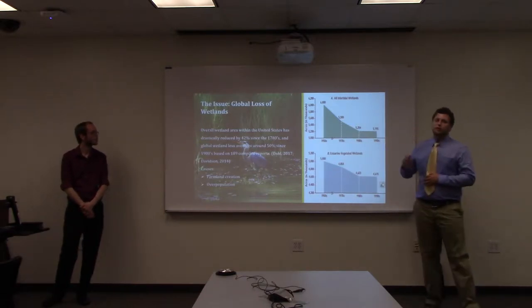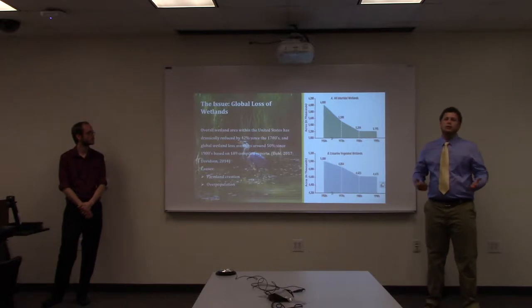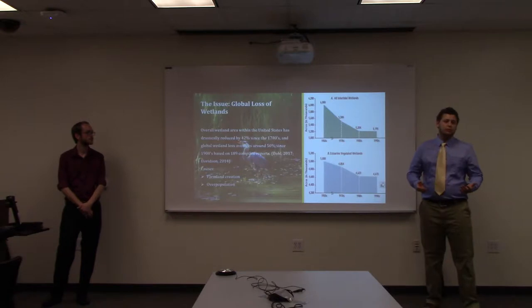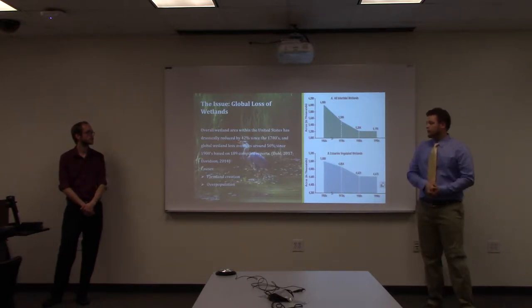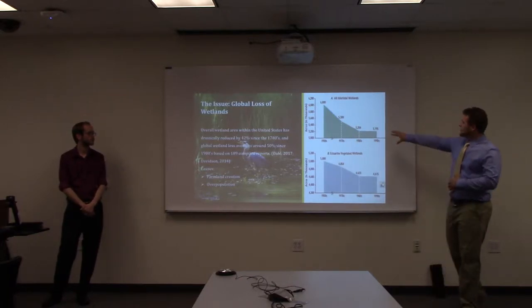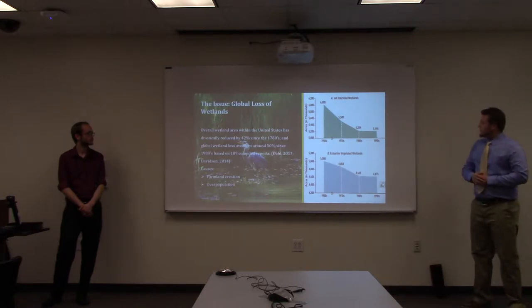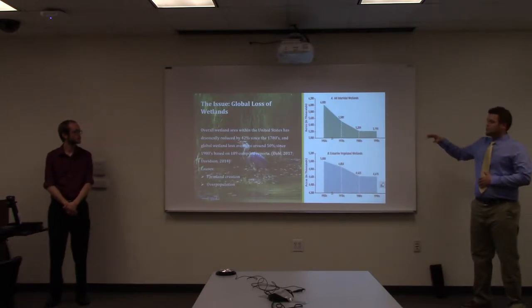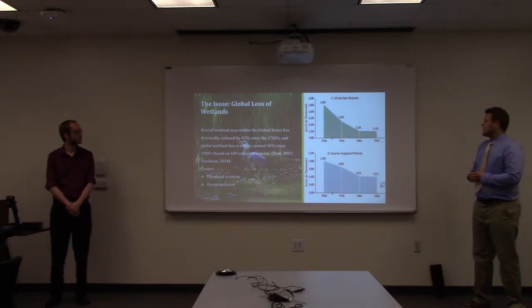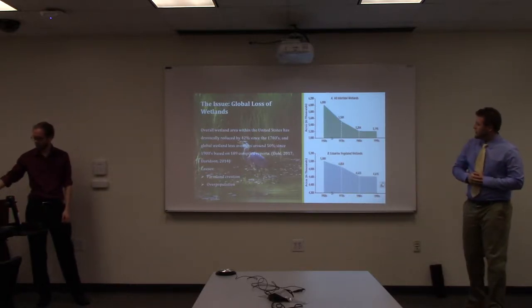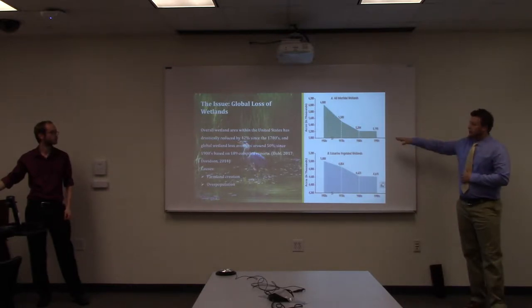42% of wetlands since the 1780s in America have been lost, possibly due to overpopulation draining them for farmland. Globally, we're losing 50% since the early 1900s. This graph from the 1950s to 1990s shows a sharp decline in both intertidal and estuarine vegetated wetlands, but it plateaus off in both.